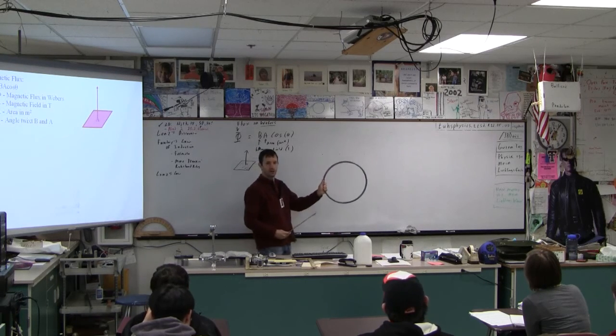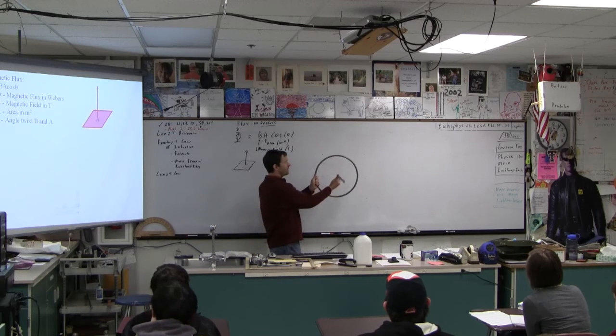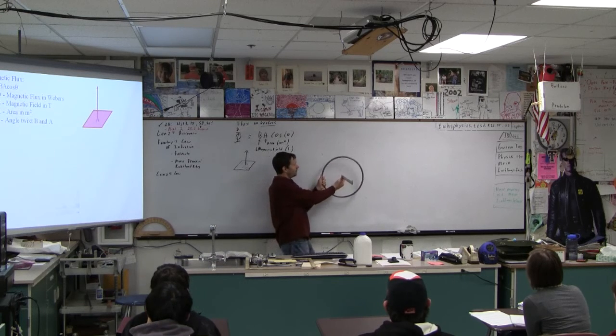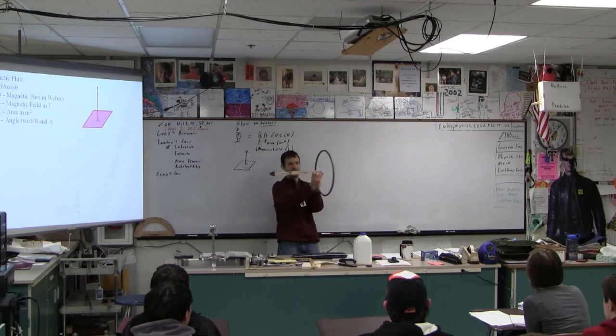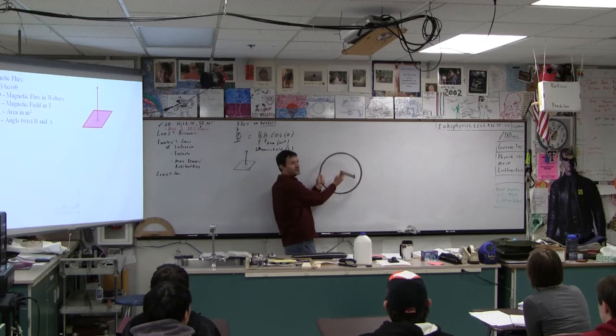This loop here is my area. This vector represents the area. So right now, the angle between out of the page and this area, this thing goes along with that area. If you can imagine that, what's the angle right now?